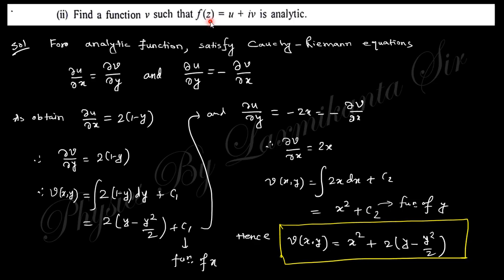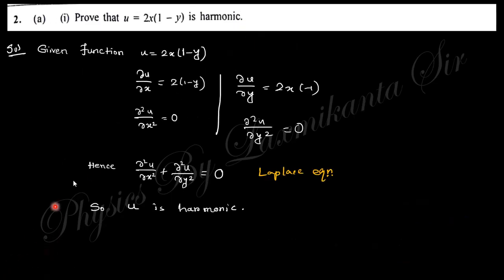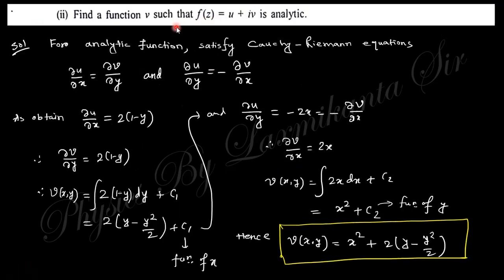The next part says: find function v such that f(z) = u + iv is analytic. The given function is u = 2x(1−y) and we need to find v. For any analytic function, the Cauchy-Riemann equations must be satisfied: ∂u/∂x = ∂v/∂y and ∂u/∂y = −∂v/∂x.